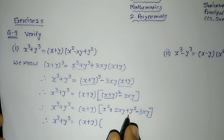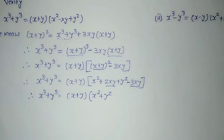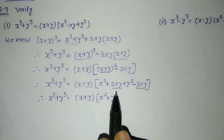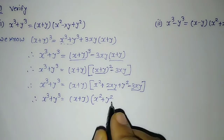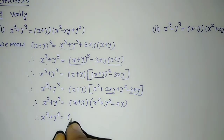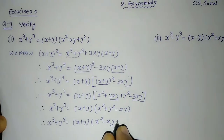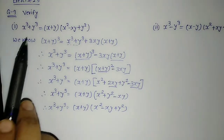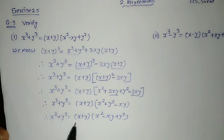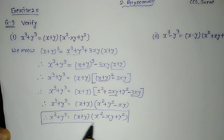You can see x square plus y square will remain as it is. Here, it is plus 2xy and here it is minus 3xy — both signs are different, so we take the difference: 3xy minus 2xy equals 1xy, and we put the sign of the greater term, that is minus 1xy. So arranged properly: x cube plus y cube is equal to x plus y into bracket x square minus xy plus y square. This is what we had to verify — verified.